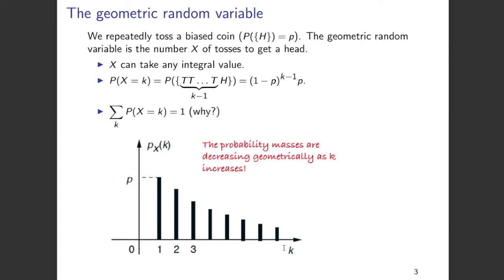In this graph, what I have shown is the probability masses along the y-axis and the number of trials along the x-axis. As you can see, as the number of trials increases, the probability masses keep decreasing geometrically as k increases. This is because the probability mass captures the number of tosses needed to get the first head. As k increases, the probability of getting k minus 1 successive tails followed by a head keeps decreasing. Hence the probability masses decrease geometrically — hence the name geometric random variable.